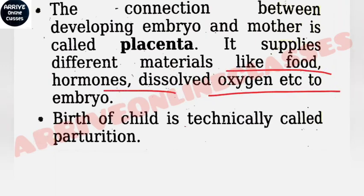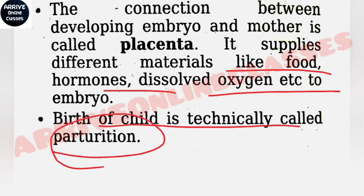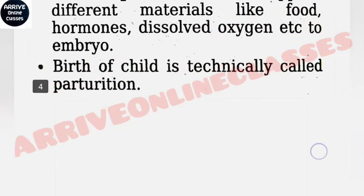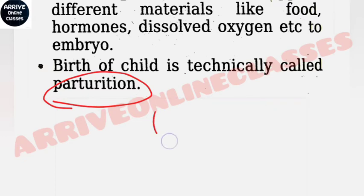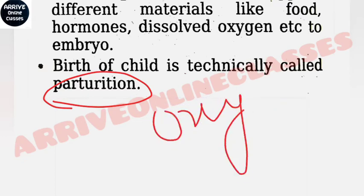The developing embryo eventually becomes a placenta. The birth of a child is called parturition. The hormone oxytocin helps in this process, and another hormone helps with the mammary gland — you can put that in the comment box.